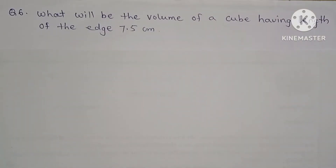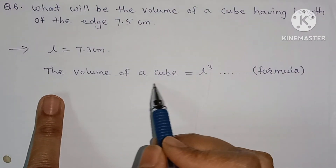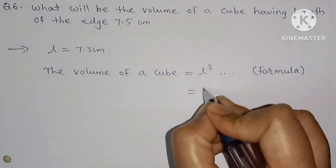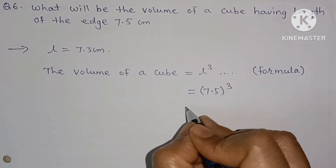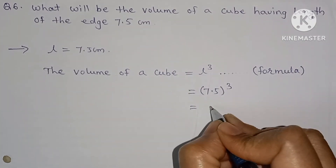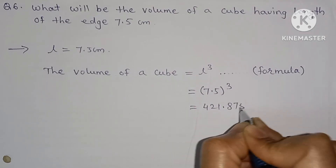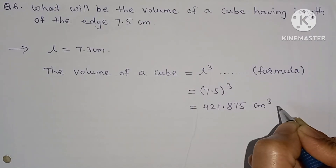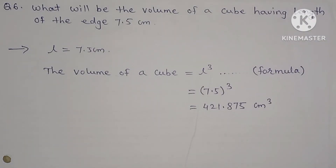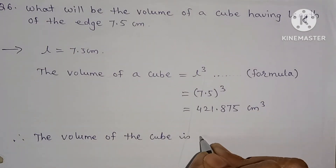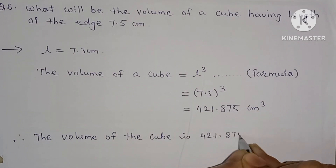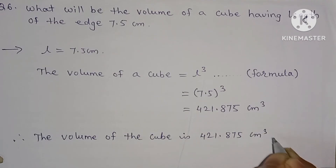Question 6: what will be the volume of a cube having length of edge 7.5 cm? The volume of a cube formula is L³. So 7.5³ = 421.875. Therefore the volume of the cube is 421.875 cubic centimeter.